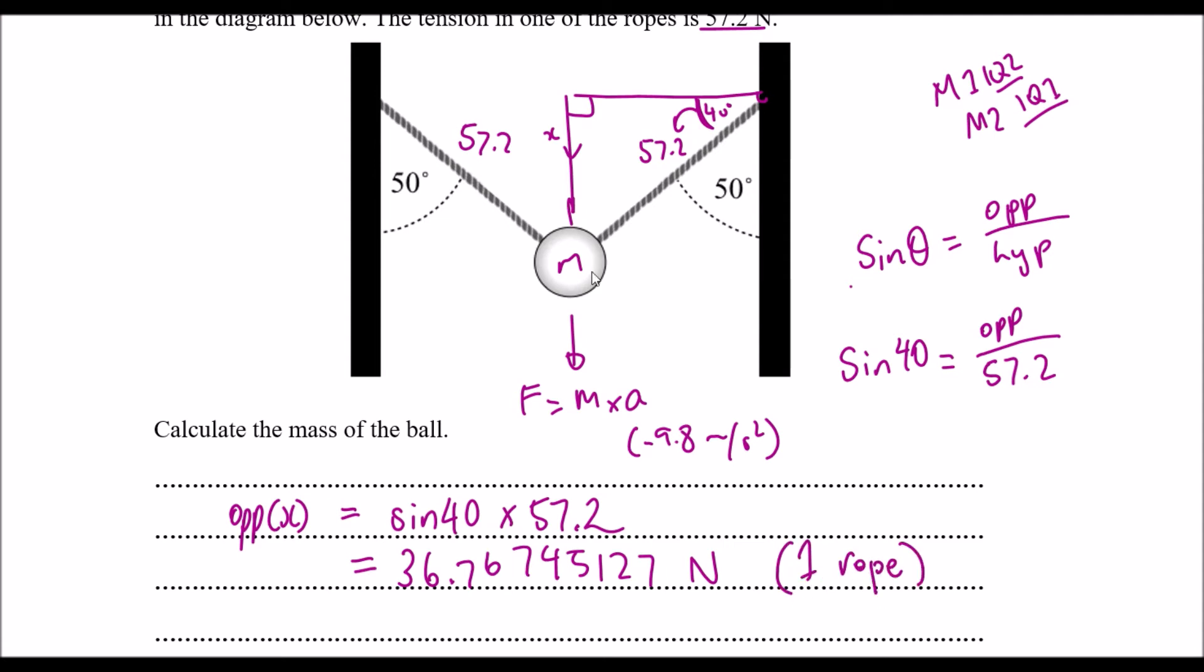But this only represents one rope. So it only represents the y component of this rope, of this rope pulling it down this way. We actually haven't accounted for this component here. So we need to add that in. Now, lucky for us, the rope is exerting the same amount of force and it's at the same angle.